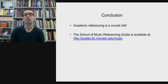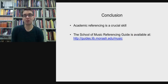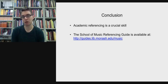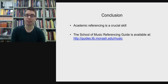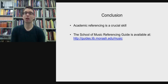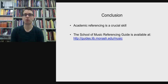In conclusion, academic referencing is a crucial skill that all students have to develop, and all of your lecturers still use referencing for the many publications that we write. Depending on the publication, we have to use different types of referencing. The School of Music Referencing Guide is available at the URL via the Monash Library Music Guide, which you can see on this screen. Good luck with your referencing, and if you have any questions, please post them on Moodle.